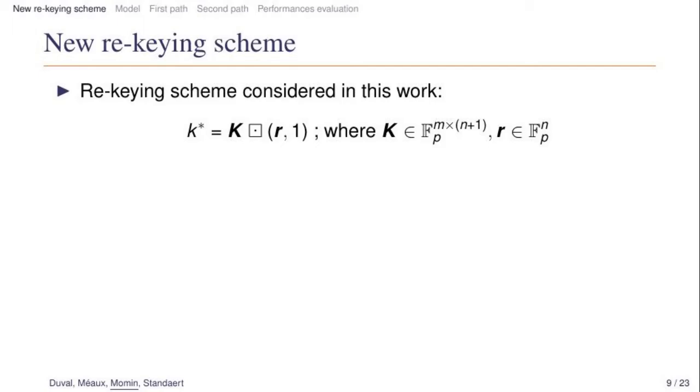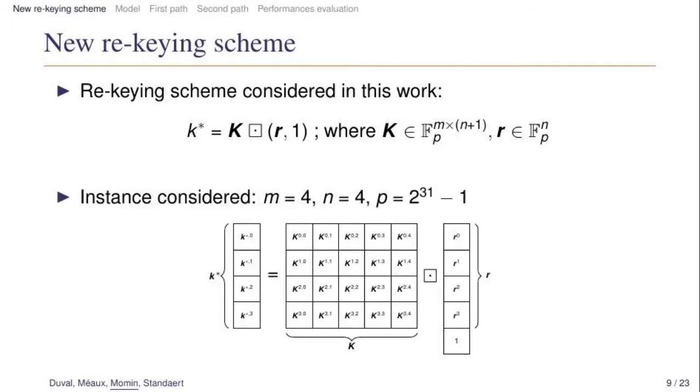So the rekeying scheme we are proposing is defined as follows: The temporary key k* is obtained by an inner product between the matrix k, which is the long-term key, with a vector composed of the vector r concatenated with 1. And all the words inside k and r are in fact inside the finite field defined by the prime p. To be more practical, we focused on a specific instance. The following parameters have been chosen: m equal to 4, n equal to 4, and the prime that we have chosen is the Mersenne prime 2^31 - 1. Here we have a graphical representation of the computation we are doing to compute this temporary key k*.